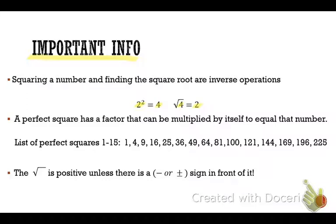A perfect square has a factor — remember, a factor can be divided into that number — but there's something special about this factor: it can be multiplied by itself to equal that number. So what are our perfect squares? You need to have the first 15 perfect squares memorized. If you take each of those numbers and multiply that number by itself, the product is a perfect square.